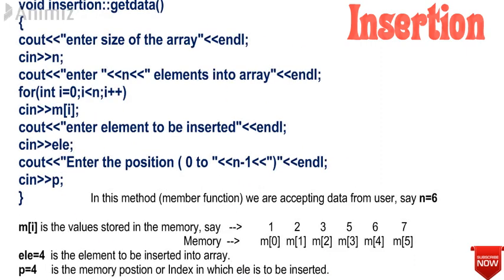In the getData member function, we accept data from the user: the size of the array, the array elements, the new element which has to be inserted, and the position of the array memory location where this new element has to be inserted.